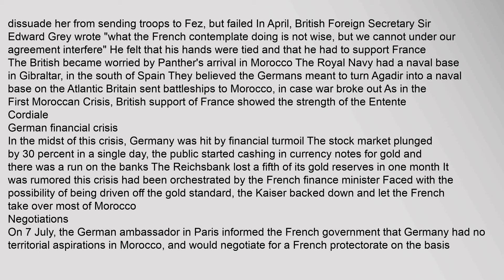Grey felt that his hands were tied and that he had to support France. The British became worried by the Panther's arrival in Morocco. The Royal Navy had a naval base in Gibraltar. They believed the Germans meant to turn Agadir into a naval base on the Atlantic. Britain sent battleships to Morocco in case war broke out. As in the First Moroccan Crisis, British support of France showed the strength of the Entente Cordiale.